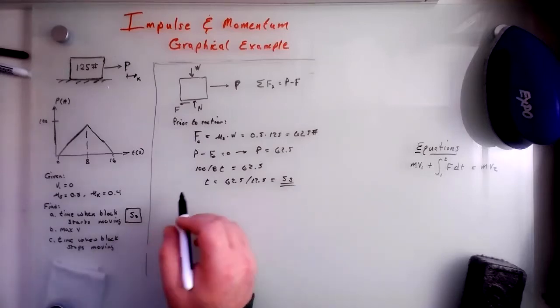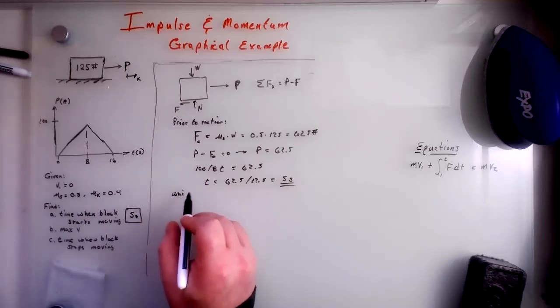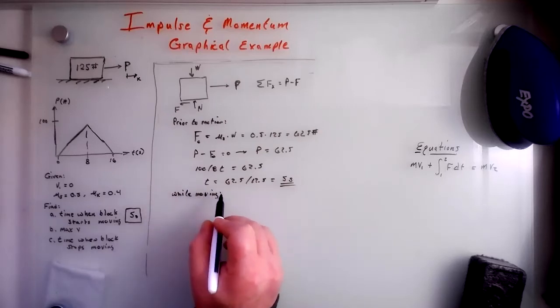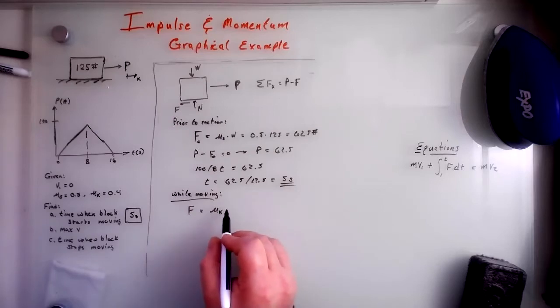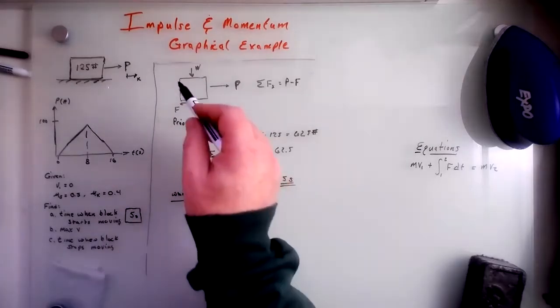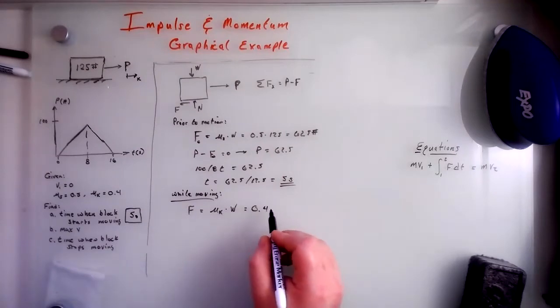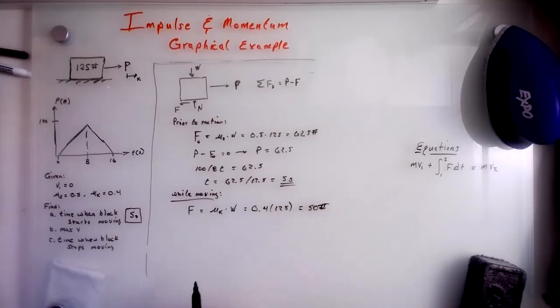So we have that. And so while moving, we need the f. Then f is equal to mu k times the normal force, which is the weight. And that's going to be 0.4 times 125 pounds or 50 pounds.